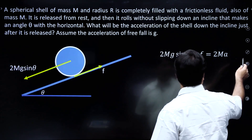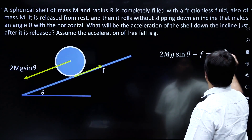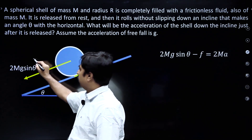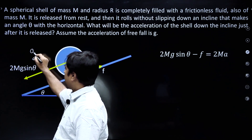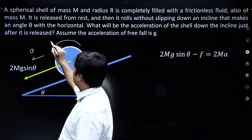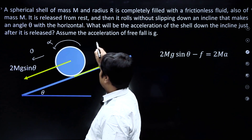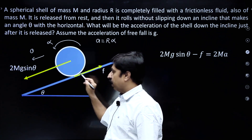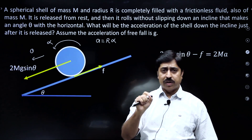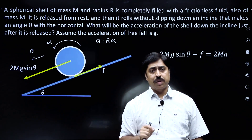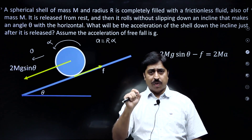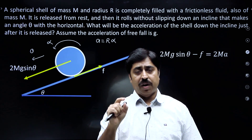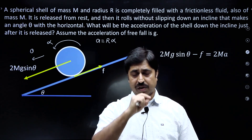The shell will have an acceleration a, and at the same time it will have an angular acceleration alpha, with a = r·alpha for the no-slipping condition to hold. Because the shell is not slipping on the inclined plane, the acceleration of its center will be equal to r times alpha, where alpha is its angular acceleration.